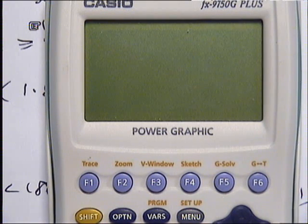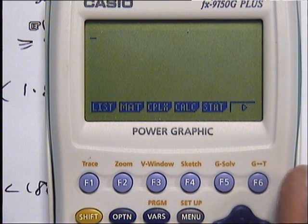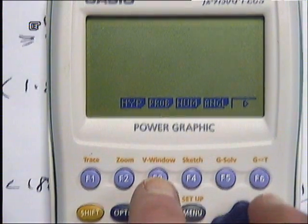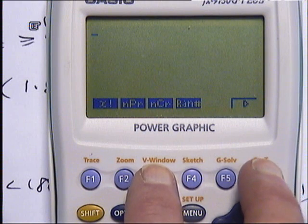Next thing you do is press options, and we're going to scroll across till we see probability, which is above the F3 screen. So go for that one, and then we go again to the right.